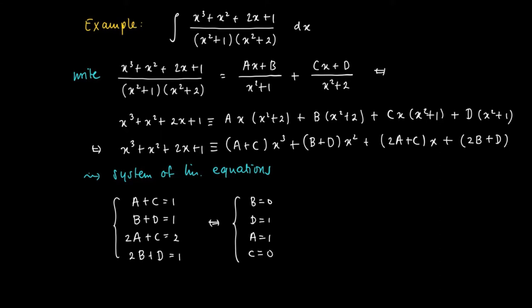So we may write the rational function differently as the sum of two rational functions of which the numerator is a linear term and the denominator is one of the irreducible quadratic terms. So we may write this differently as